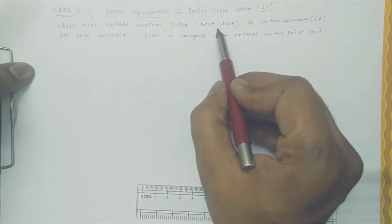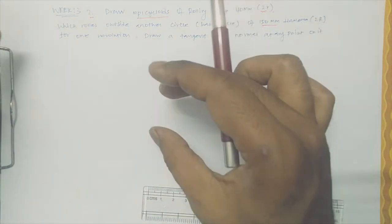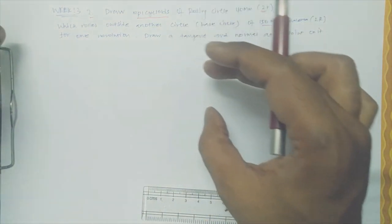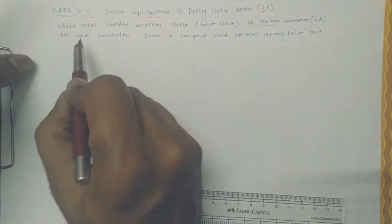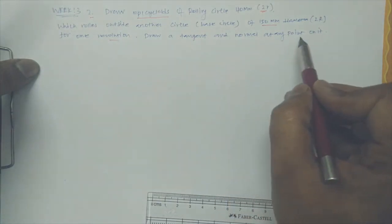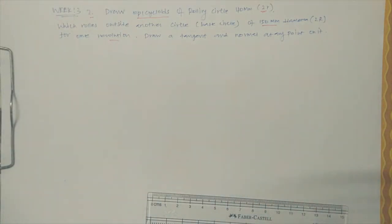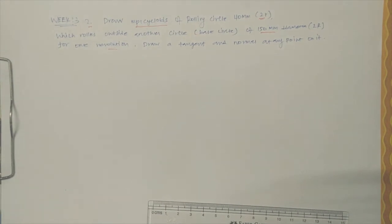So which rolls outside another circle that's considered as a base circle, is 150mm diameter. That's a coin which is going to roll over another circle for one revolution. Draw the tangent and normal at any point, this is the question.